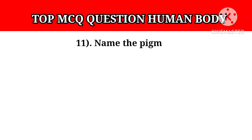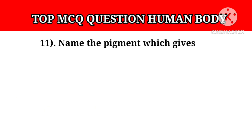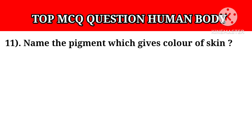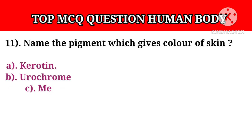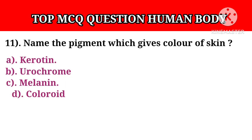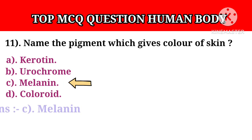Question number 11: Name the pigment which gives color to skin. Option A: Carotene. Option B: Eurochrome. Option C: Melanin. Option D: Coloroid. Answer C: Melanin.